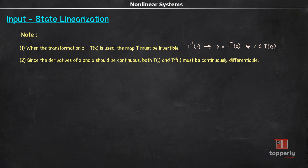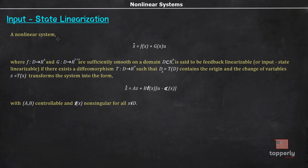Having discussed this, let us now formally define feedback linearizable systems. A nonlinear system, where f maps from D to R^n and g maps from D to R^{n×p} are sufficiently smooth on a domain D ⊆ R^n, is said to be feedback linearizable (or input-state linearizable) if there exists a diffeomorphism T: D → R^n such that the change of variables z = T(x) transforms the system into z-dot = Az + B[γ(x)u - α(x)], with (A, B) controllable and γ(x) non-singular for all x in D. The term 'diffeomorphism' refers to a continuously differentiable map with a continuously differentiable inverse.